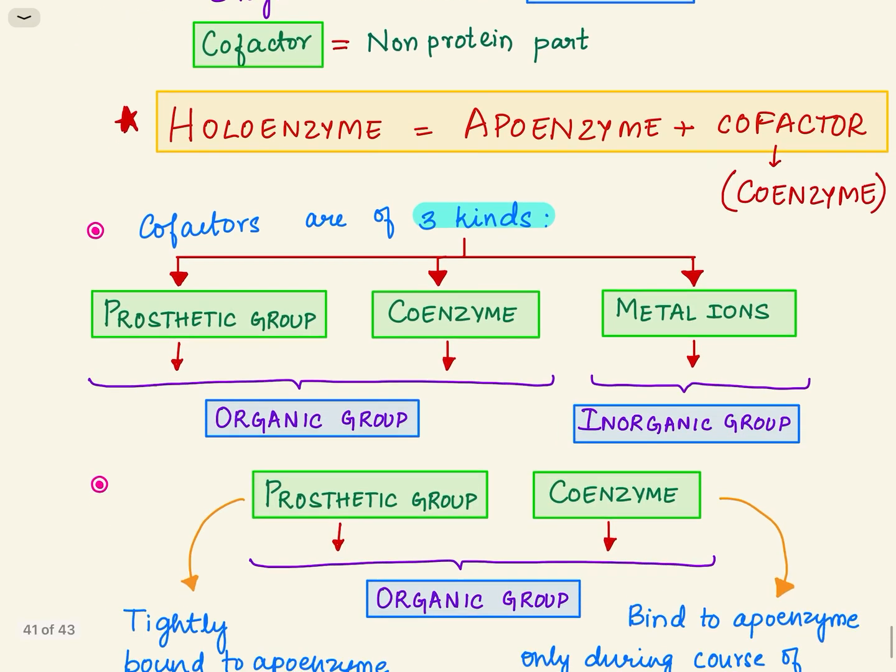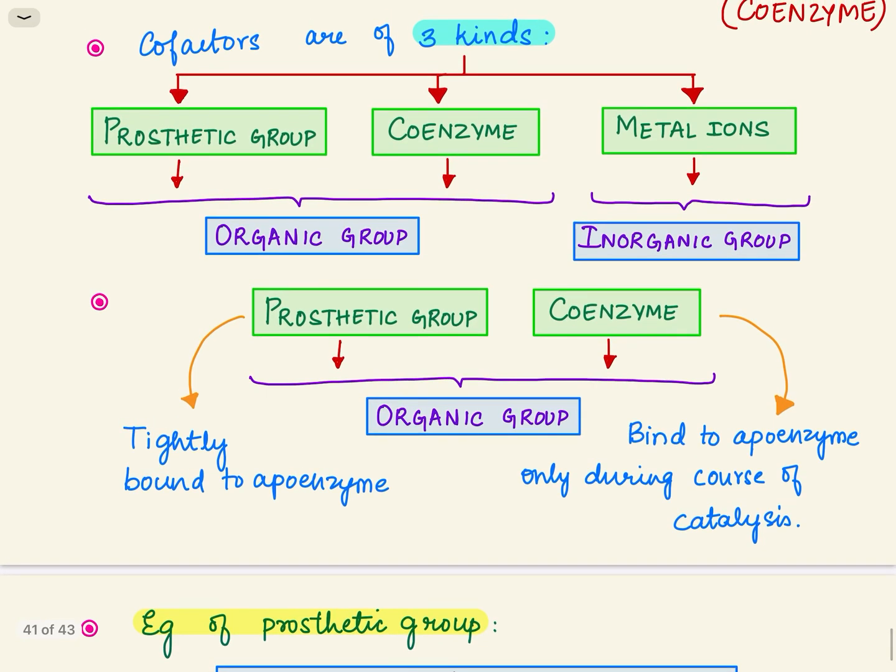Cofactors are of three kinds: prosthetic group, coenzyme, and metal ions. Prosthetic group and coenzyme belong to an organic group while metal ions belong to an inorganic group.